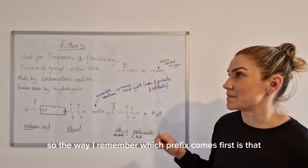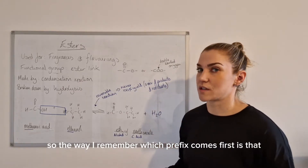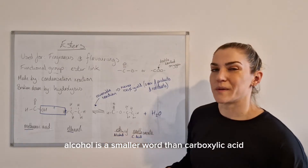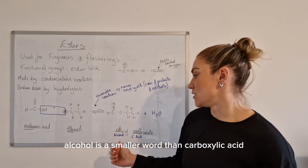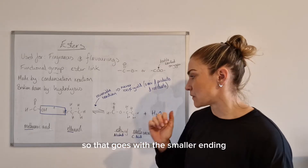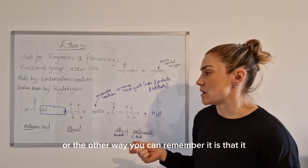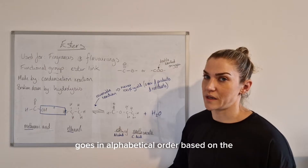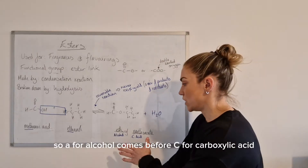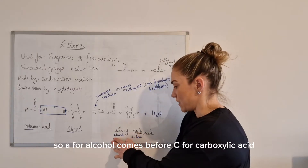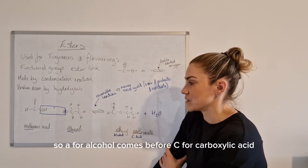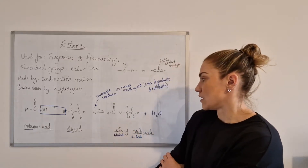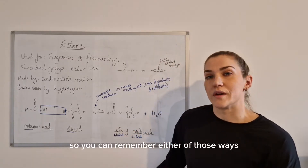The way I remember which prefix comes first: alcohol is a smaller word than carboxylic acid, so it goes with the smaller ending. Or you can remember it goes in alphabetical order — A for alcohol comes before C for carboxylic acid — so it's the alcohol prefix that comes first.